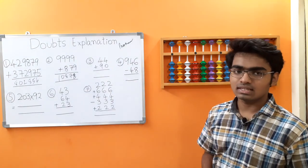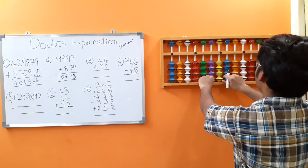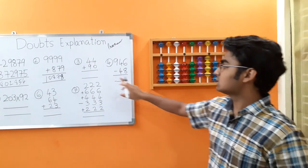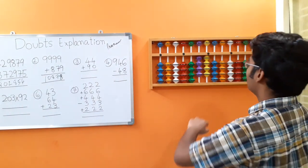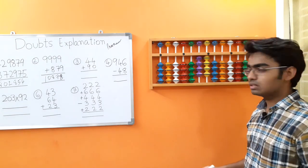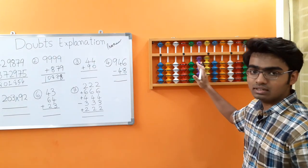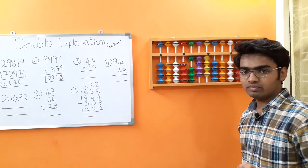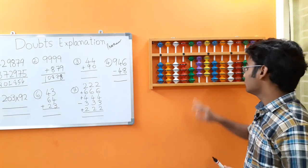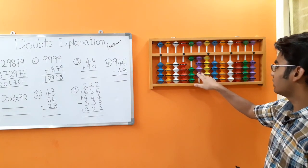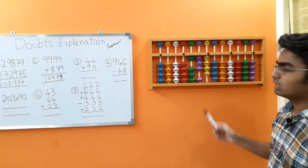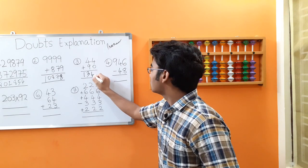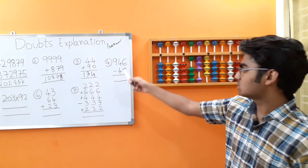We have 44 plus 90 as our next sum, raised by one of our viewers. I have placed 44, plus 90. We use big friends concept here because we cannot add 9 directly on the tens rod. Add the boss 10 — in big friends, 9's friend is 1 — subtract 9's friend 1. We got the answer as 134. Hope this is clear.